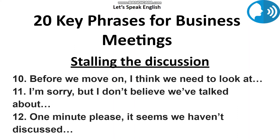In a very formal setting you might say, "Before we move on, we need to look at..." but adding the phrase 'I think' is a good way to soften the tone. Another example: "I'm sorry, but I don't believe we have talked about how we are going to resolve the issue of manpower shortage." To sound more formal you might say "I'm sorry, but we haven't talked about..." — adding 'I don't believe' helps achieve a softer tone. You could also say: "One minute please. It seems we haven't discussed the individual project deadlines." Including the phrase 'it seems' gives the statement a much friendlier tone.